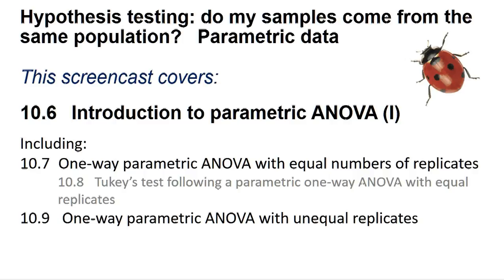And Section 10.9 One-Way Parametric ANOVA with Unequal Replicates. This test asks if three or more independent data samples can be considered to be from a common statistical population. A significant result indicates that this is unlikely and that there are significant differences between two or more of the samples.